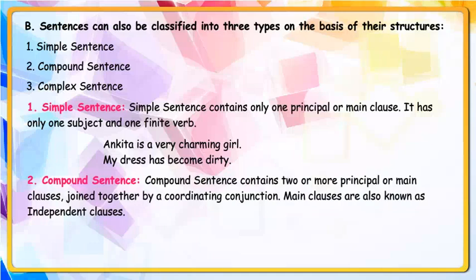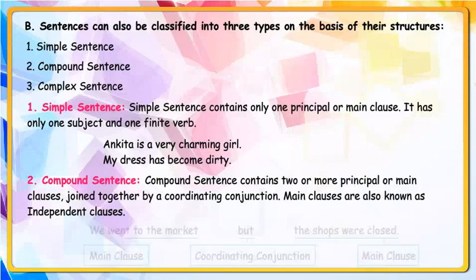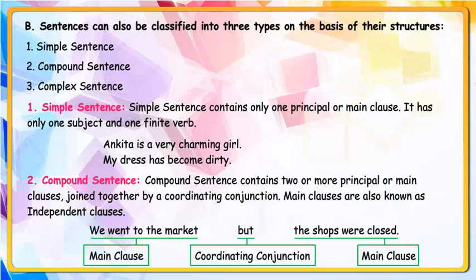Compound Sentence contains two or more principal or main clauses joined together by a coordinating conjunction. Main clauses are also known as independent clauses. For example: We went to the market, but the shops were closed. Here, 'We went to the market' is the main clause, 'but' is the coordinating conjunction, and 'the shops were closed' is the main clause.